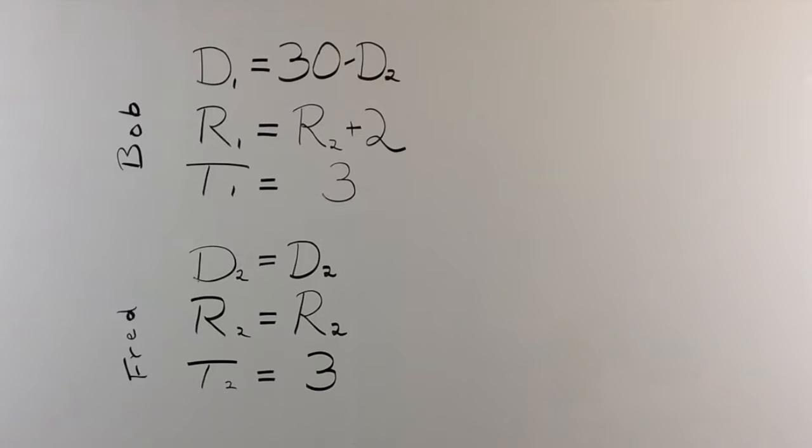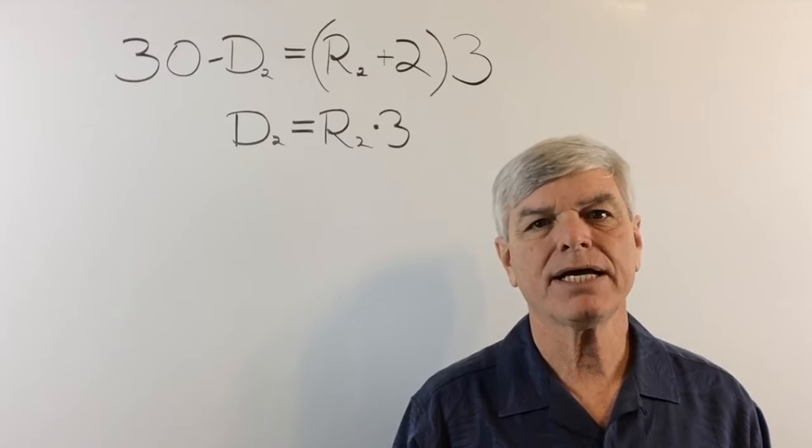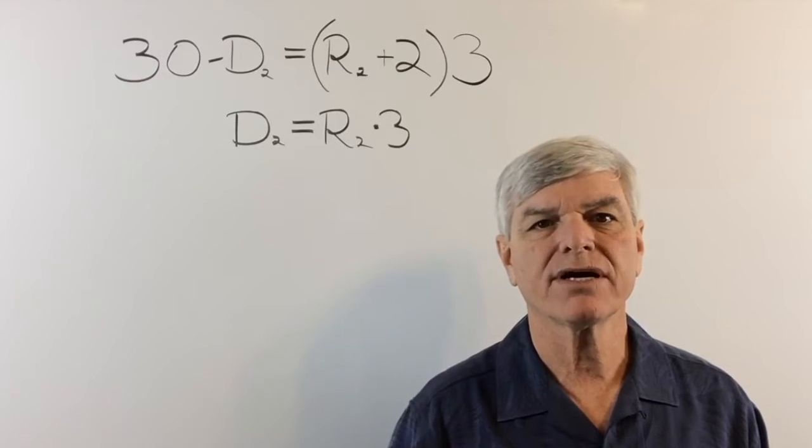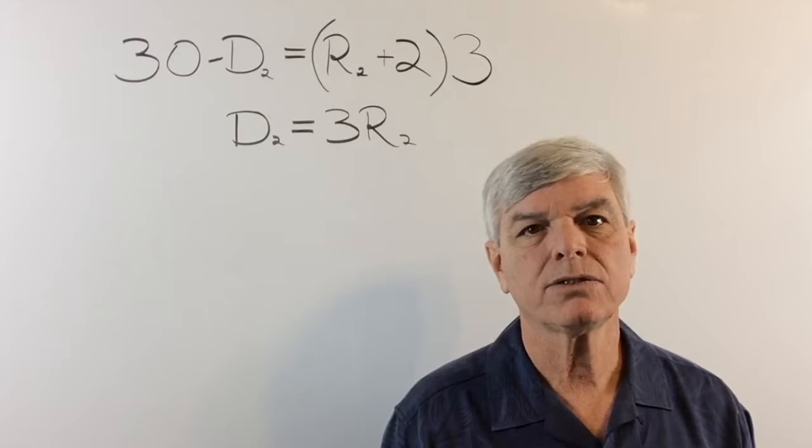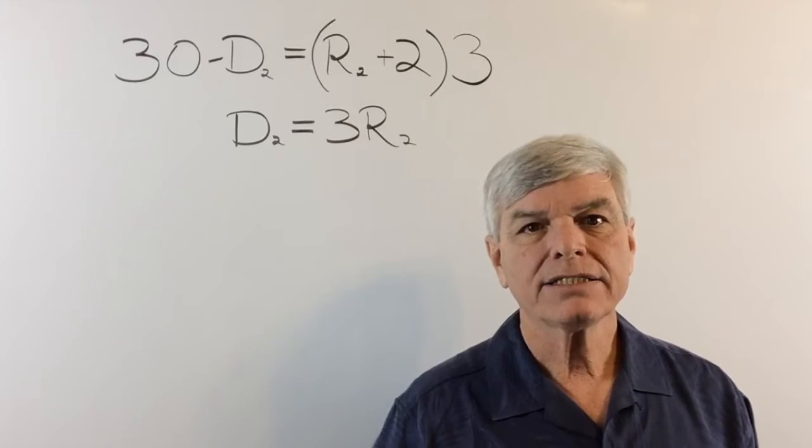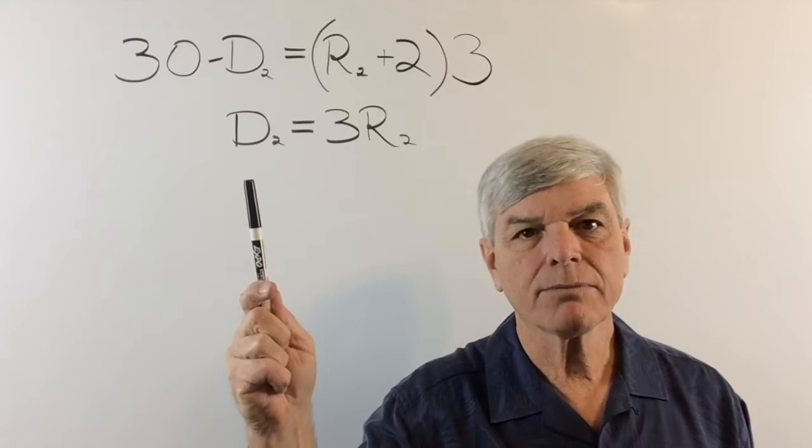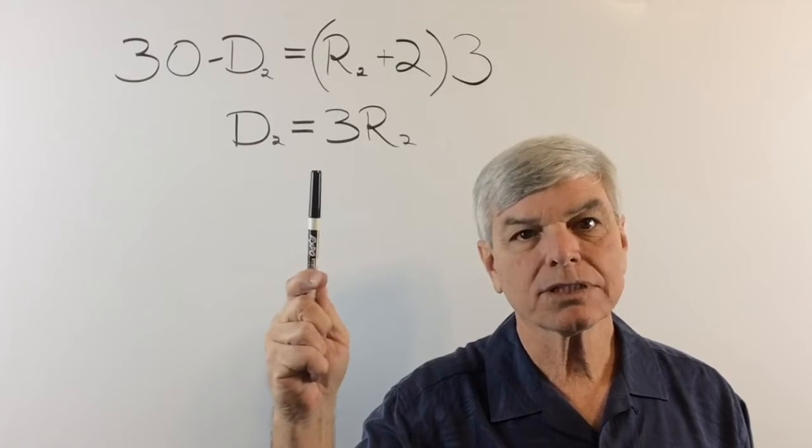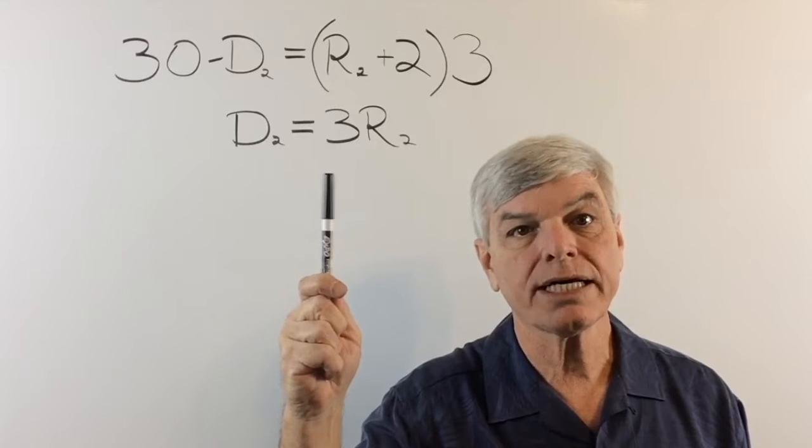As you can see, it's going to be pretty simple. D2 equals R2 times 3. Yeah, just like that. Except that we like the coefficient in front of the variable. So let's change that. Yeah, D2 equals 3 times R2. And that is the only variable. If you look around here, that's the only variable where there's an equal sign after it. That is, we know what D2 equals. D2 equals 3R2.